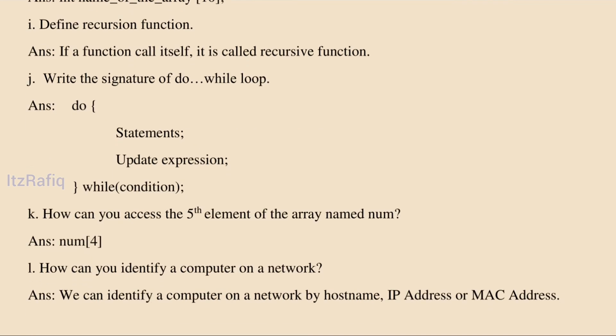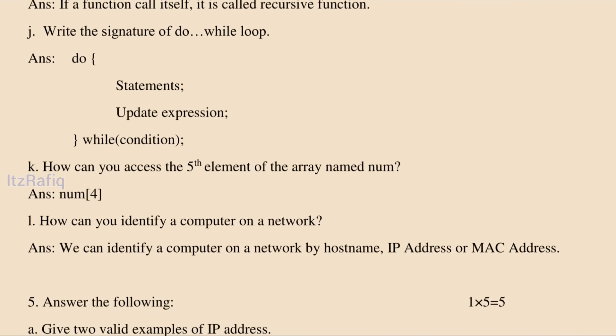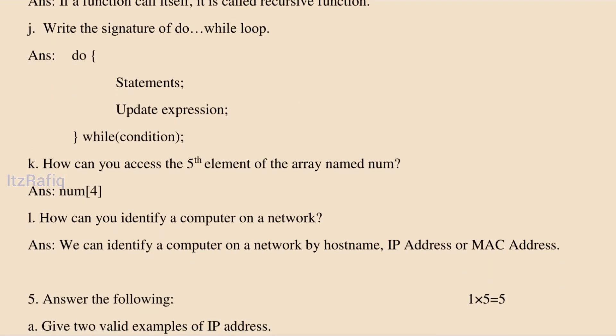Write the syntax of a do-while loop. First write do, then curly braces, then the statement, then the update expression. After the closing bracket write while, then inside brackets the condition, followed by a semicolon.